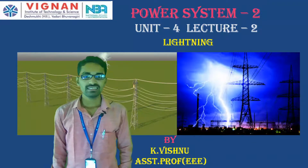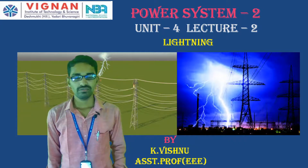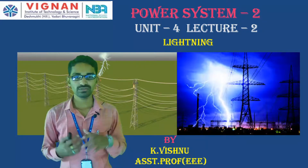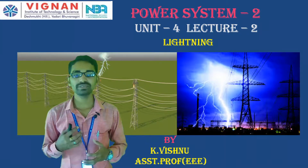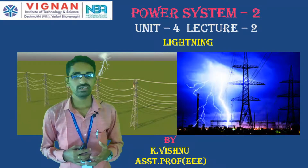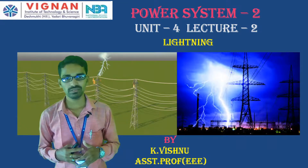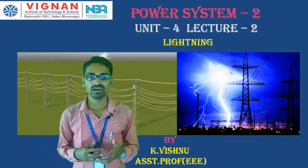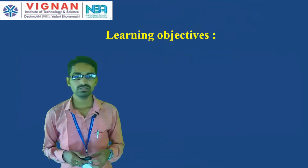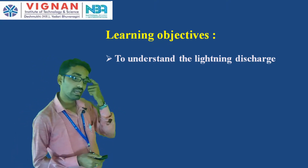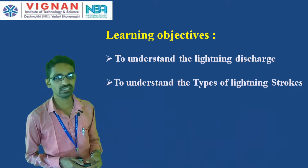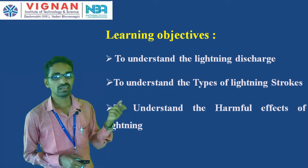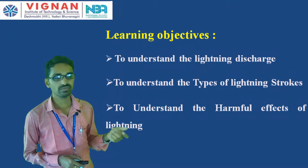In the last class we saw arcing grounds and Petersen coil grounding, and how these cause overvoltages. Today we are going to see about lightning: how lightning happens, how clouds form, how thunders form, how lightning falls on transmission lines, and what are the harmful effects. The learning objectives are to understand lightning discharge, the types of lightning strokes, and their harmful effects on the transmission lines and power system.